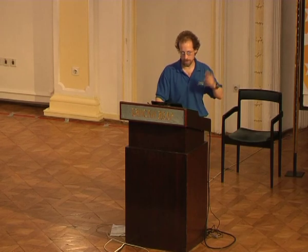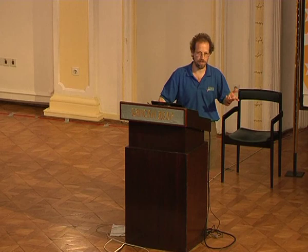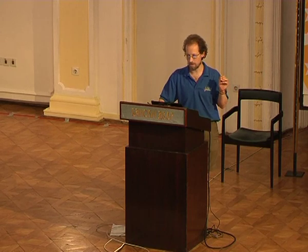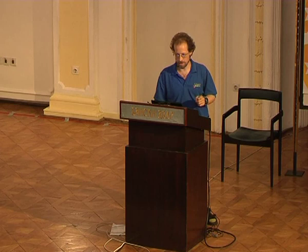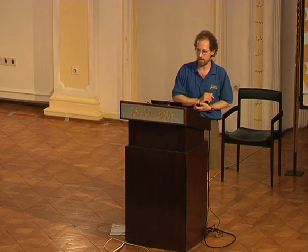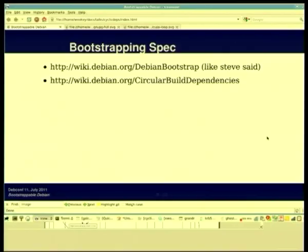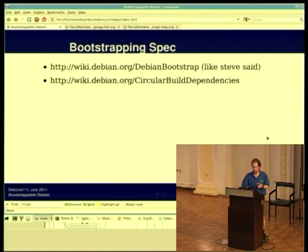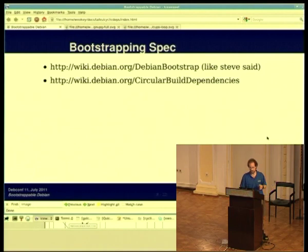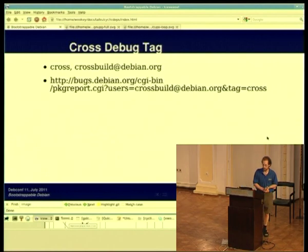There's some documentation about this. It is, as ever, slightly out of date with respect to this presentation, but it's pretty good. As Steve Langasek said, if you want to get something like this changed, you need to write down exactly what it should be. So I started writing down exactly what should be done, and that's what's on the Debian Bootstrap wiki page. It doesn't have the patches I've done there yet, but it will soon. There's actually about 20-odd common build loops I've found so far, and the circular build dependency page lists those.